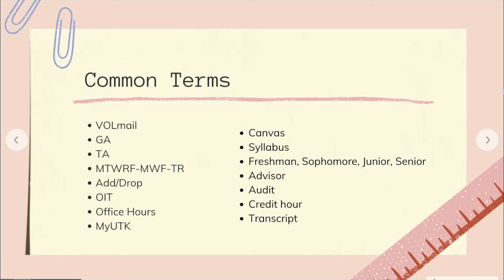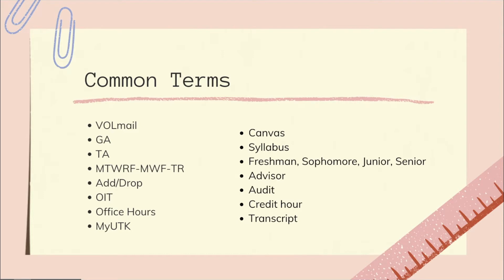There's a lot of lingo or special vocabulary we use when talking about our classes or our experience at university. The first term is VolMail, which is your assigned UT email. When you enroll at the university they will help you set this up, and it's what we use as our main form of communication between students, professors, or any other faculty.